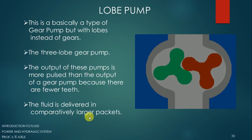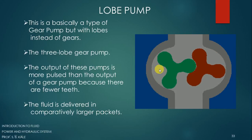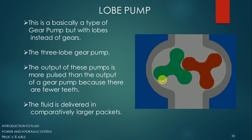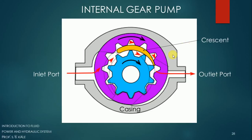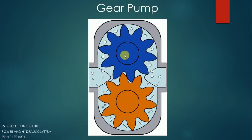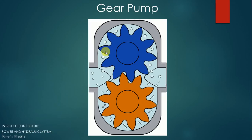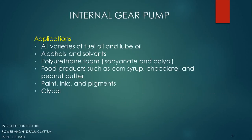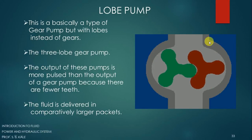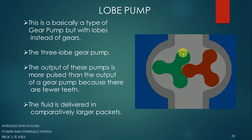The fluid is delivered in a comparatively larger pocket. In the internal gear pump, the pocket present is quite small, and in the external gear pump the available pocket is also very small, so the fluid discharge is less compared to the lobe pump. In the lobe pump, more space is available and that is why more discharge is possible.